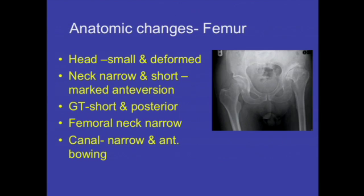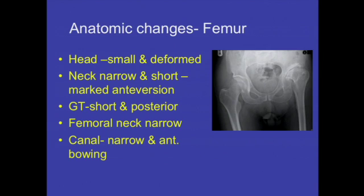The anatomical changes on the femoral side in a dysplastic hip include a head that is usually small and deformed, a narrow and short neck with marked anteversion. Sometimes you have to excise the neck completely to the calcar to avoid this anteversion. The greater trochanter is short and posterior, and sometimes you have to do a greater trochanter osteotomy to relocate it in proper anatomical position. The femoral canal is narrow with anterior bowing of the femur, which you must keep in mind when preparing the femoral canal to avoid perforation.